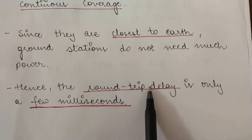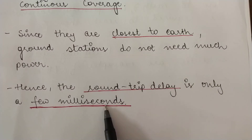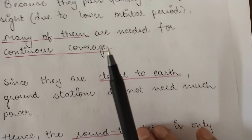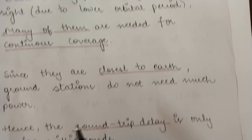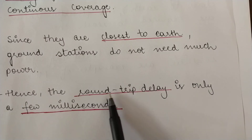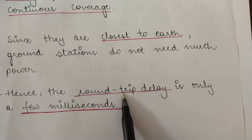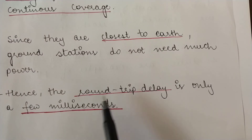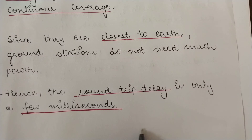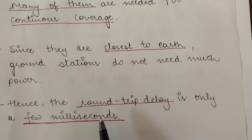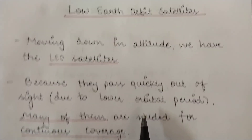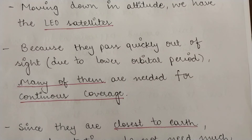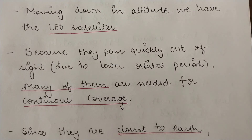The round trip delay for LEO satellites is only a few milliseconds because these satellites are much closer to the earth. Since the distance traveled is less, the time taken to transmit the signal from one ground station to the satellite and then rebroadcast it to another ground station is obviously only a few milliseconds. This concludes the discussion of medium earth orbit satellites and low earth orbit satellites.